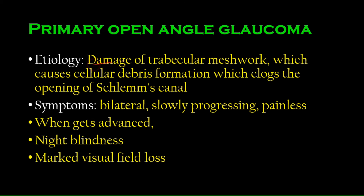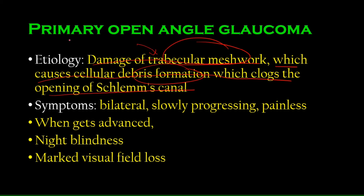So: damage of the trabecular meshwork causes cellular debris formation, which clogs the opening of Schlemm's canal. Whether it's debris blocking the meshwork or a pathology directly damaging it, this can cause primary open-angle glaucoma — but the angle itself remains open and normal.